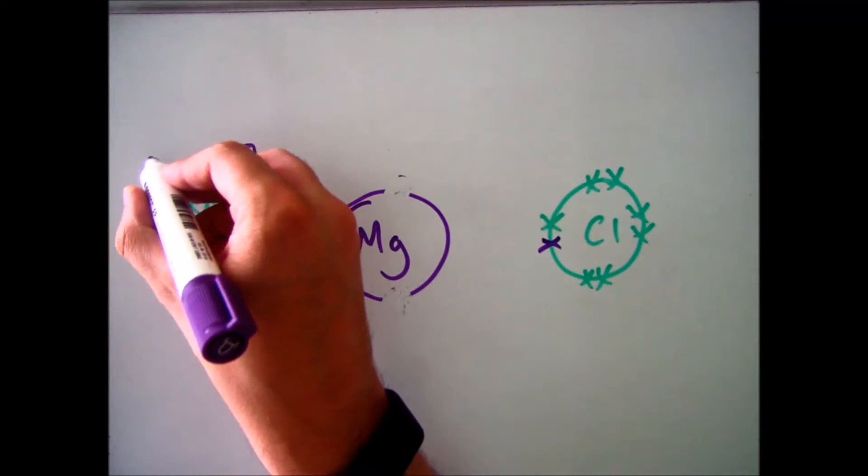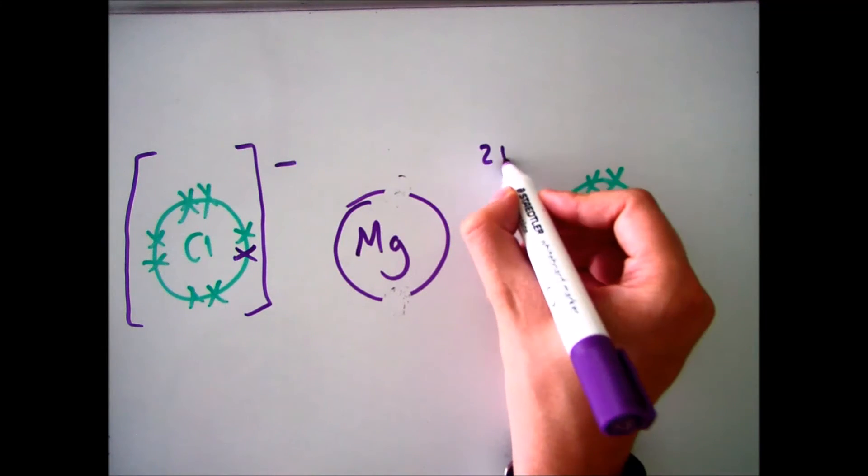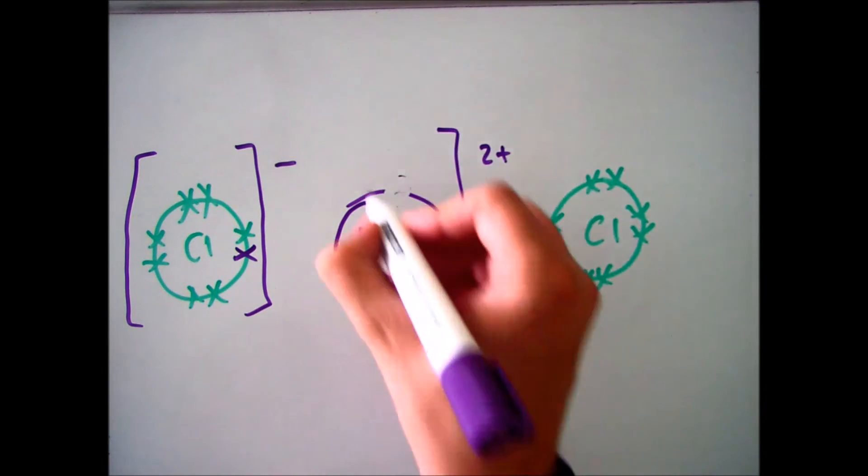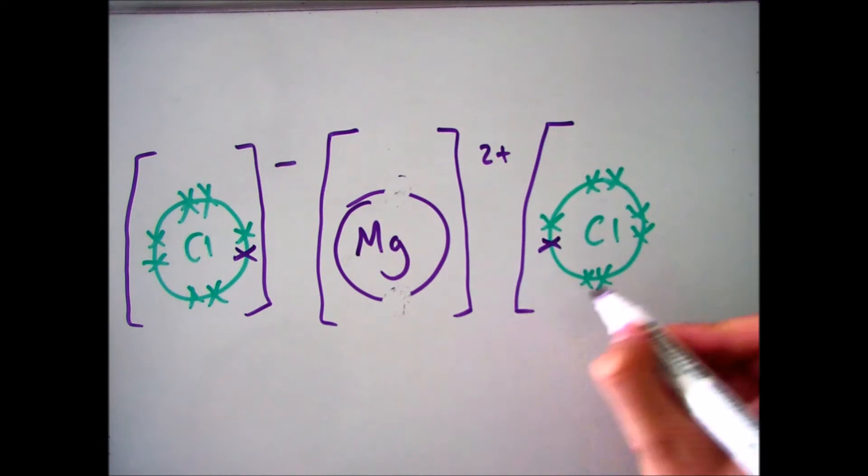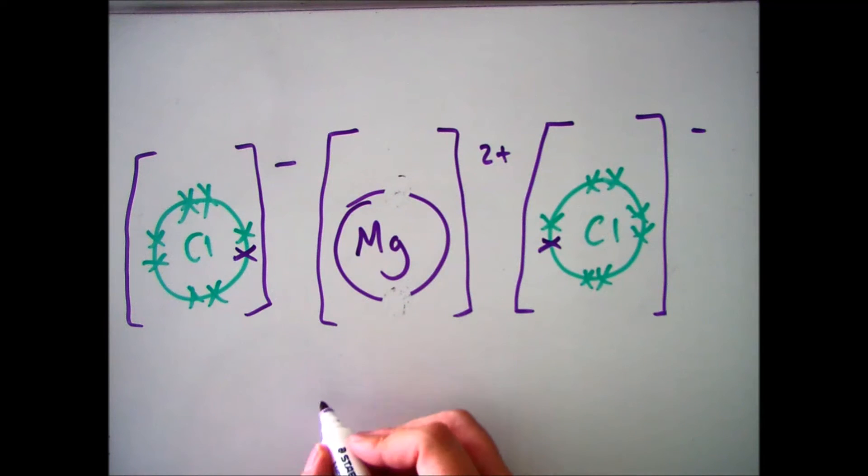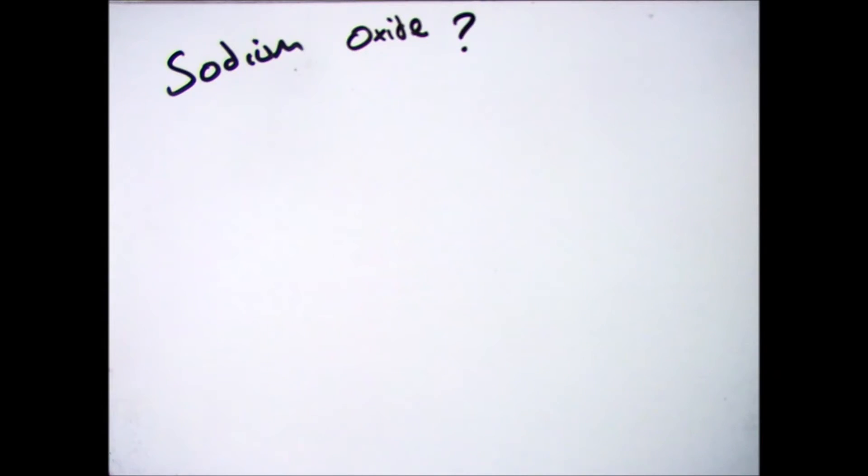Then put the charge up at the top with a bracket around. So chlorine has gained one electron, is negative, put a bracket around it. Magnesium has lost two electrons, it's become 2+, put a bracket around it. And chlorine has become Cl-, gaining an electron. And that gives you your overall formula of MgCl2. So just make sure that's how you draw it once you've actually done the swapping of electrons.